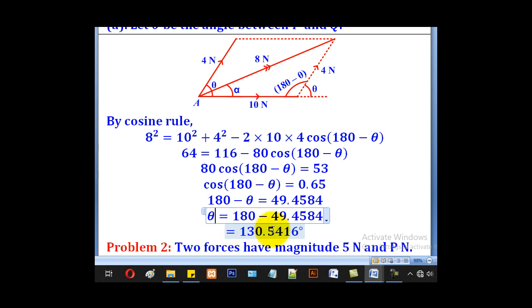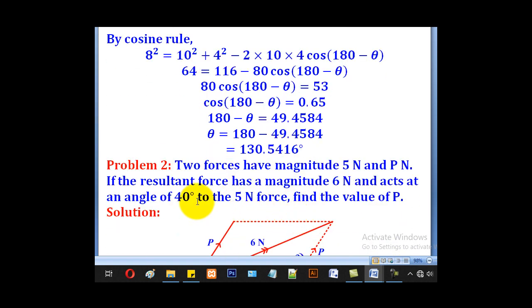Then when we get arc cos 0.65 we shall get 49.4584. Then when we make theta the subject we shall come up with 130.5416 degrees. So that is the angle they wanted.